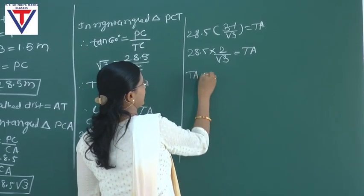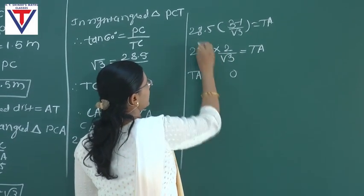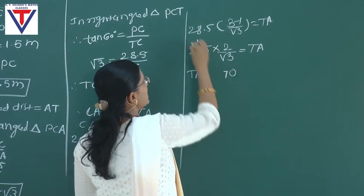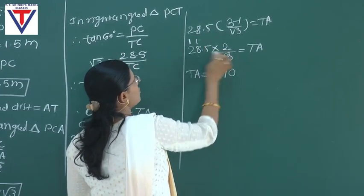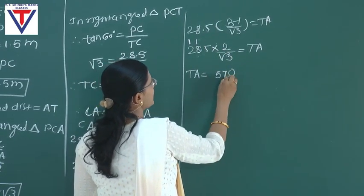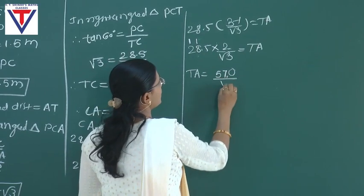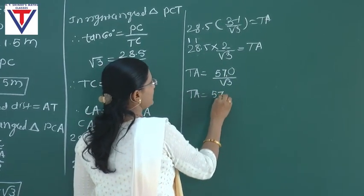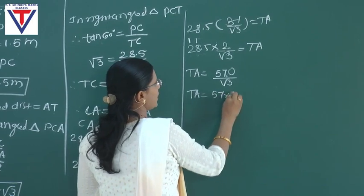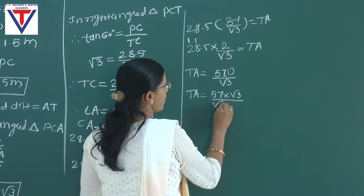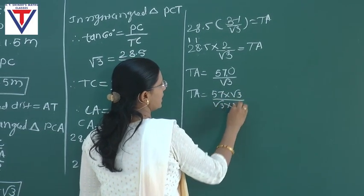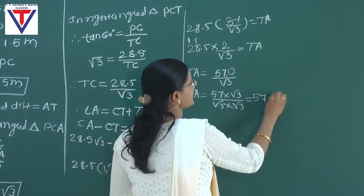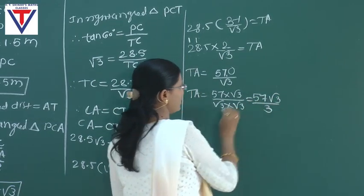On multiplying: 28.5 times 2 equals 57. So we have 57 upon root 3. Now we rationalize this: 57 times root 3 upon root 3 times root 3, giving 57 root 3 upon 3.